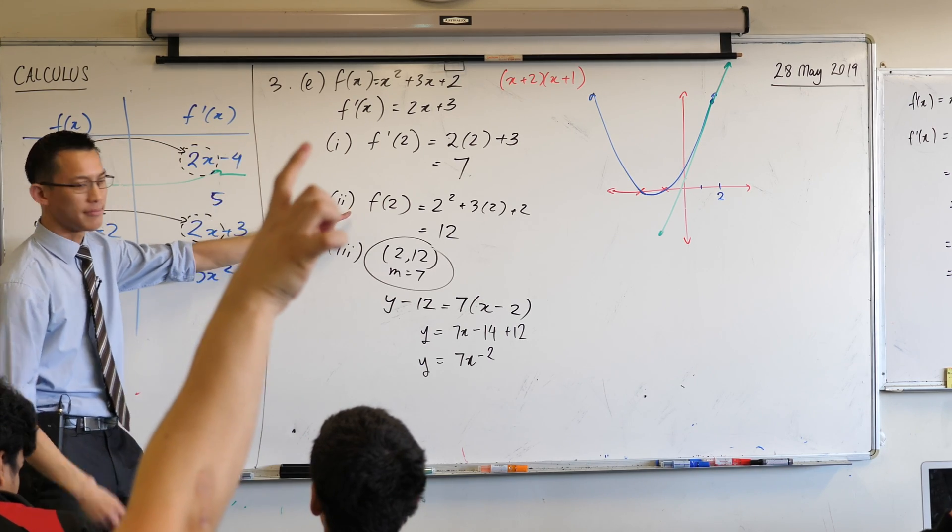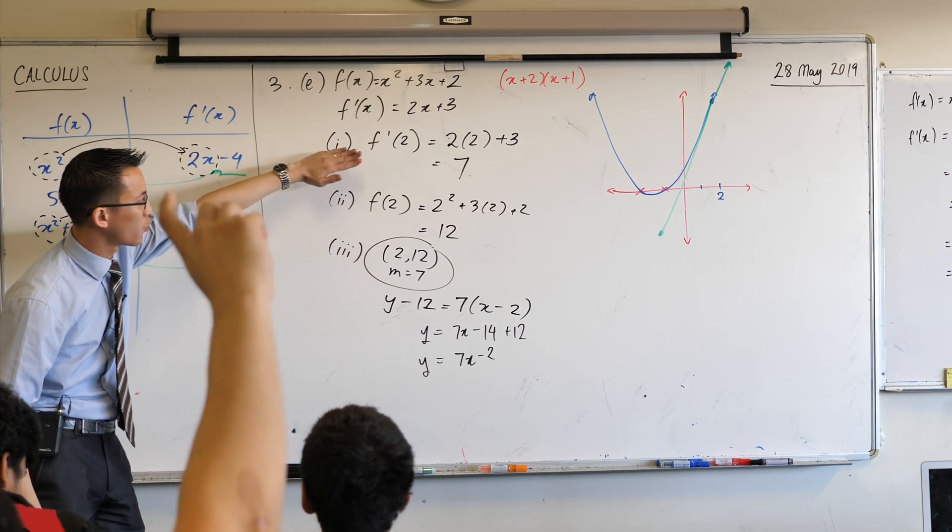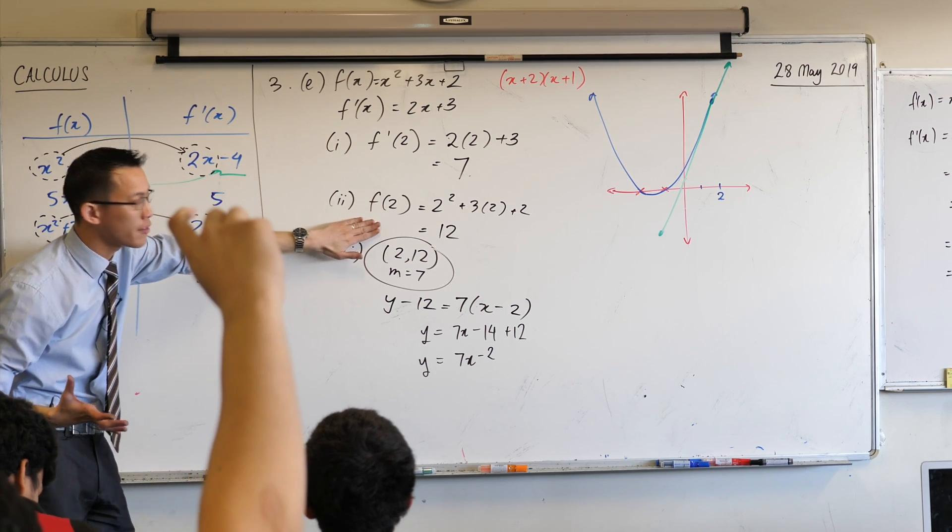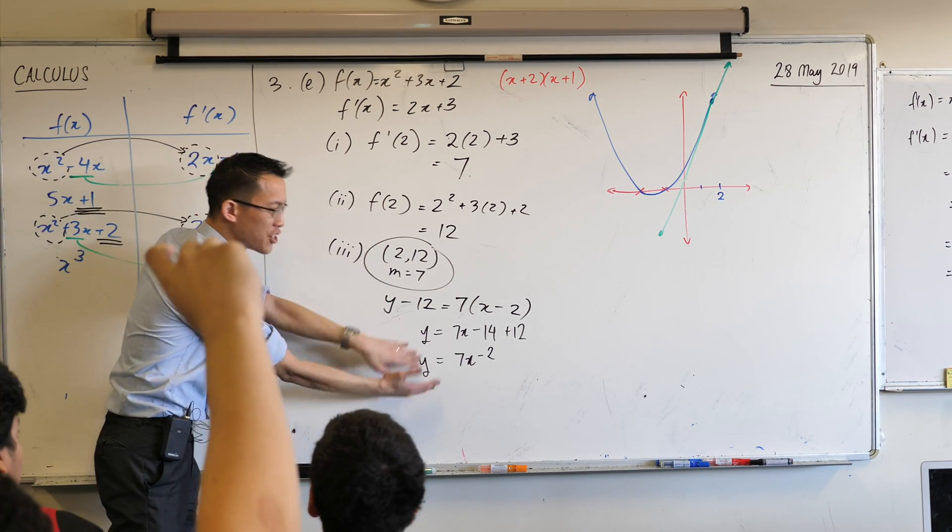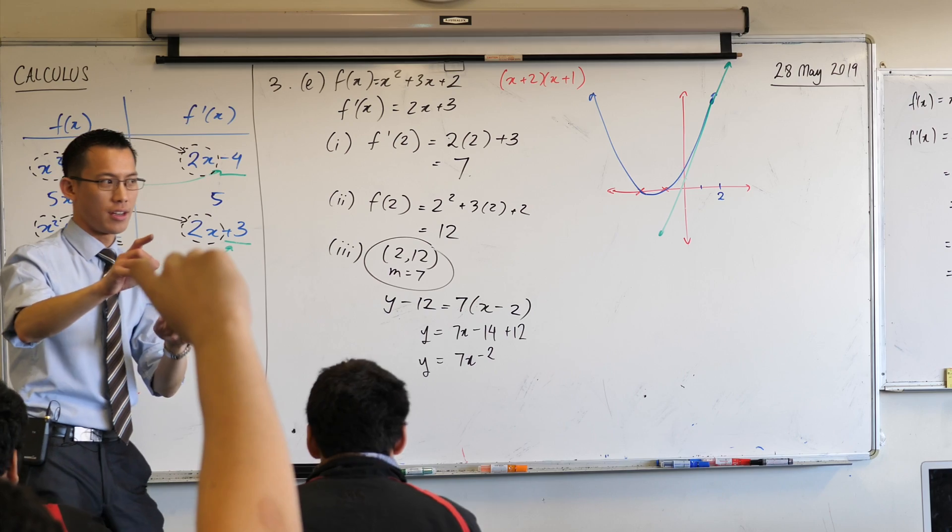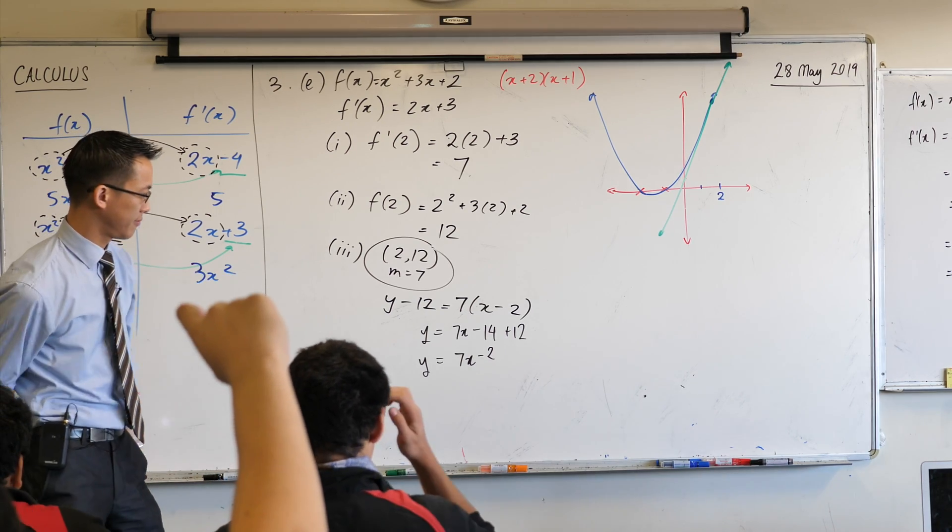We just found out what the equation of the tangent is. Very good. So we worked out the gradient of the tangent here. And then we pieced it together with other information to get the equation, the entire thing about the tangent. Okay. 7x minus 2, right? Yep.